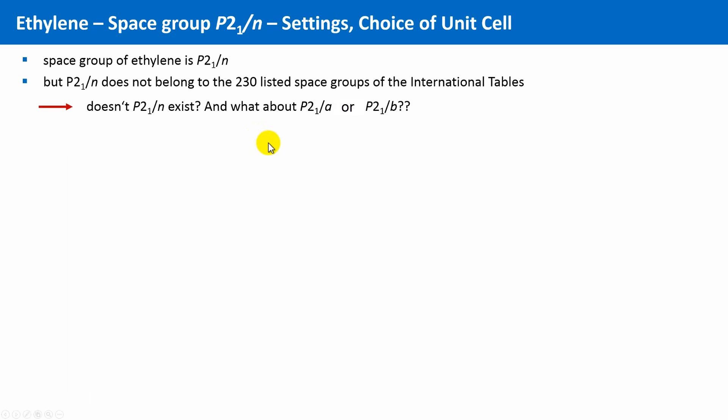Okay, only one point is left for this unit. The space group of ethylene is P21/n. But P21/n is not listed as one of the 230 space groups. Hmm, does it mean that P21/n does not exist? Well, of course not. It is only a variant of P21/c, as well as the two space groups P21/a or P21/b.